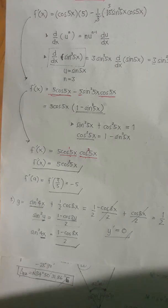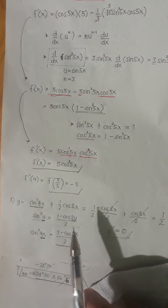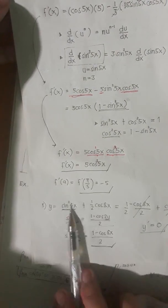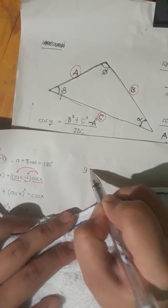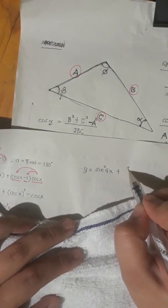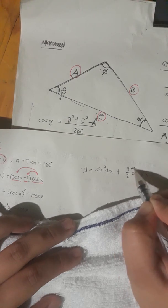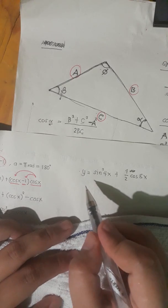By turning the original function into a simpler form, we could more easily get its derivative. But what if we try to directly get this derivative without simplifying using the trigonometric identity? Let's have a different approach just to confirm that the derivative of y equals sine squared of 4x plus 1 half cosine of 8x is equal to 0.